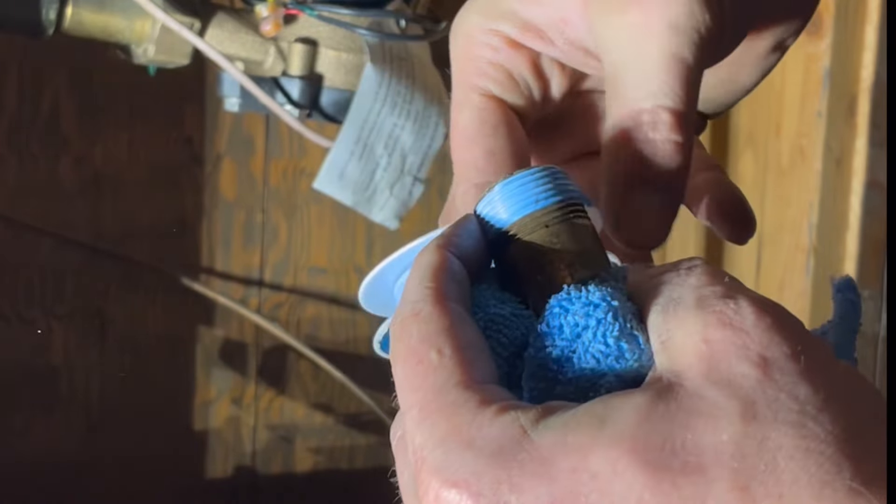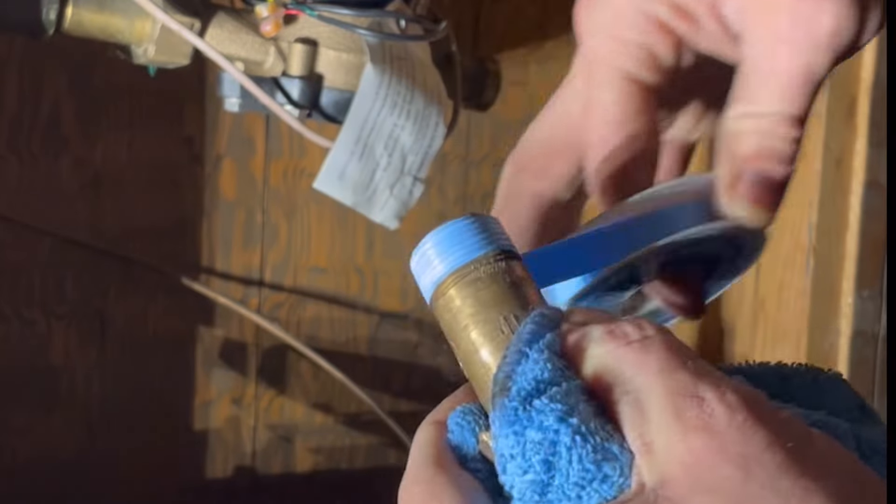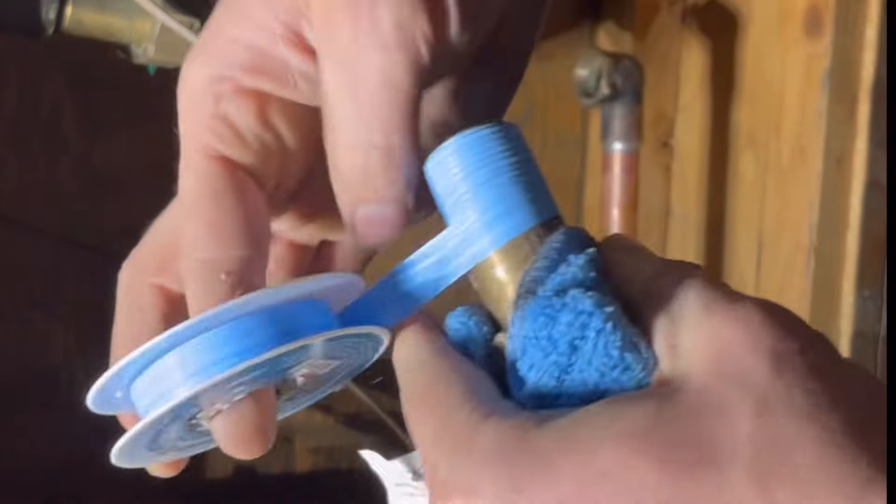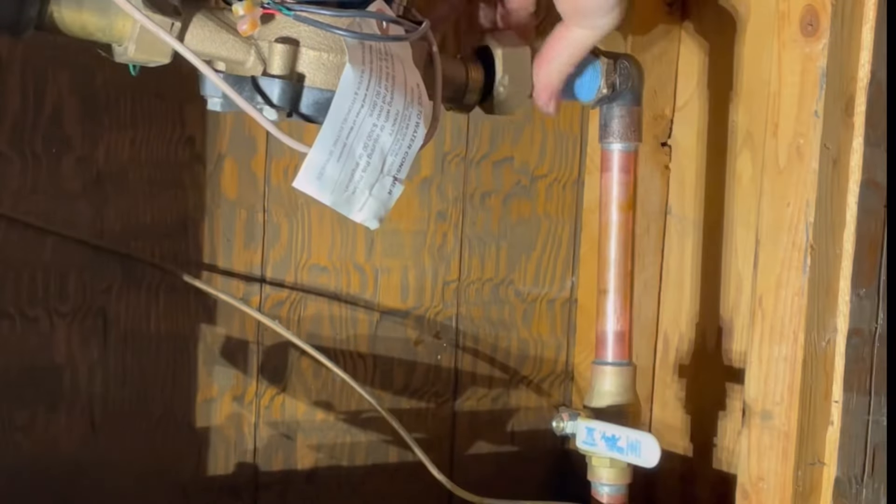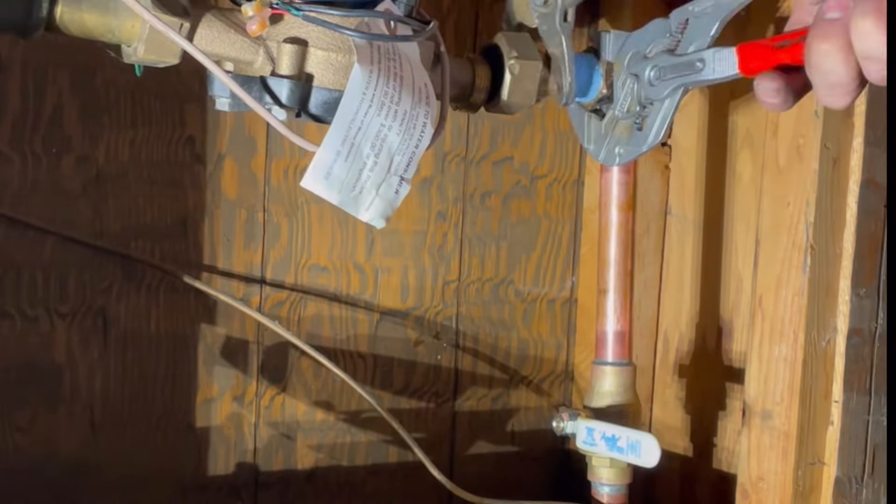Now getting the existing meter nipple, which is in good shape, ready. I over-tape a little bit, this just helps me to be able to peel it back off because I don't really like seeing the excess Teflon tape.